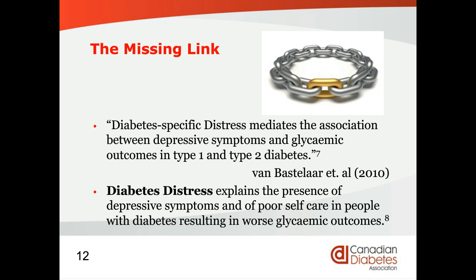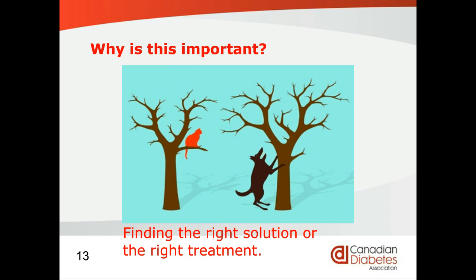Fisher and Van Bastelaar concluded that diabetes distress, unlike depression, was directly linked to poor glycemic control and problematic self-care behaviors. Diabetes distress was a missing link explaining the presence of both depressive symptoms and poorer self-care. If you only treat depression, you may be, figuratively speaking, barking up the wrong tree — because research shows it's important to address diabetes distress even when depression is present, in order for there to be improvement in glycemic outcomes.